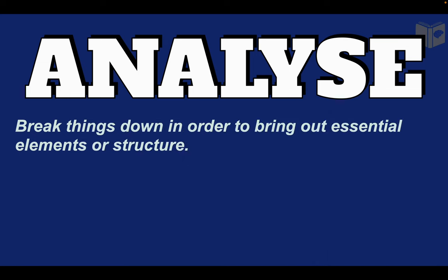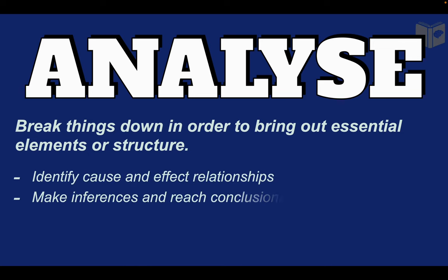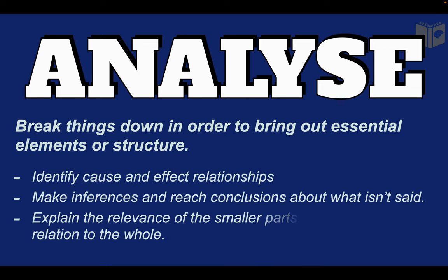Well put simply, when we analyze we break things down in order to bring out essential elements or structure. This is done by identifying cause and effect relationships, by making inferences and reaching conclusions about what is not said, or by explaining the impacts of the smaller parts of a system in relation to the whole. However, in language and literature, can we streamline this process and make it clear?